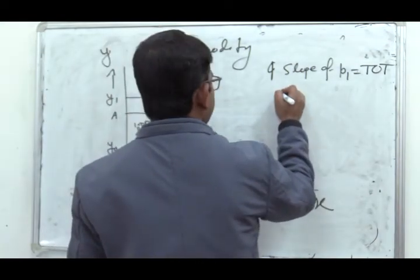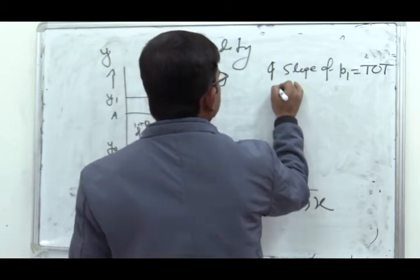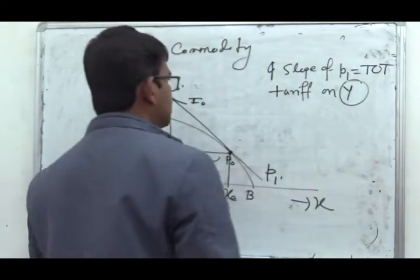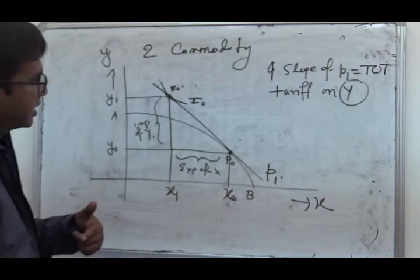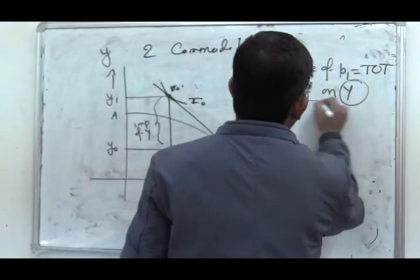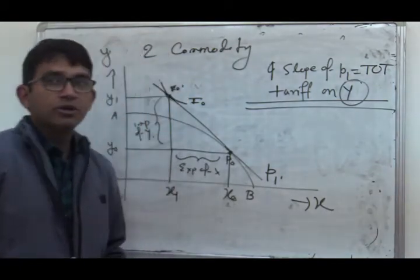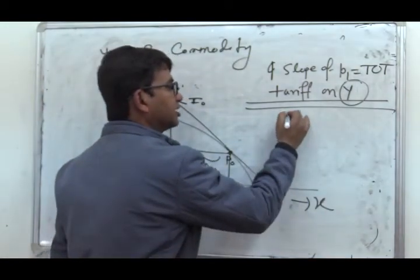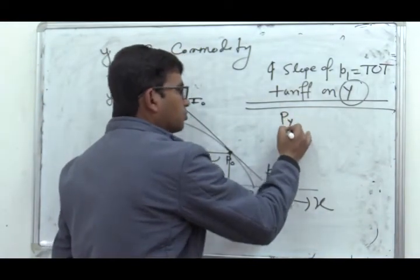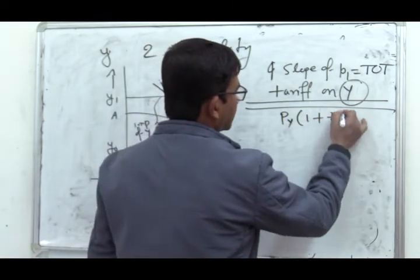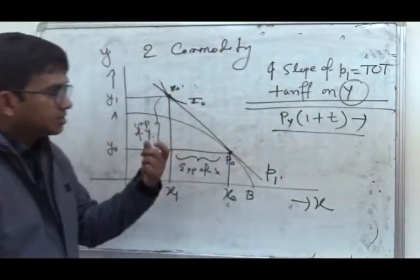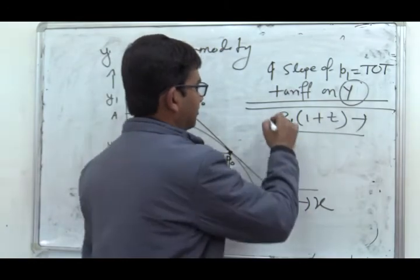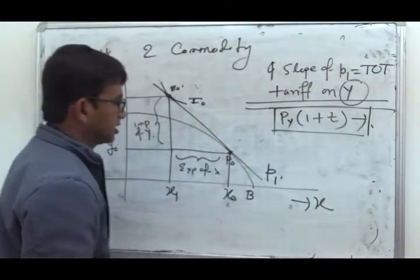Now let us consider that the country protects sector Y, meaning a tariff is imposed on Y. Whenever a tariff is imposed, there will be no change in the international prices, but domestic consumers will have to face the protective price: P_Y equals (1 + t) times the original price. This is the price imposed on the domestic market due to the tariff.